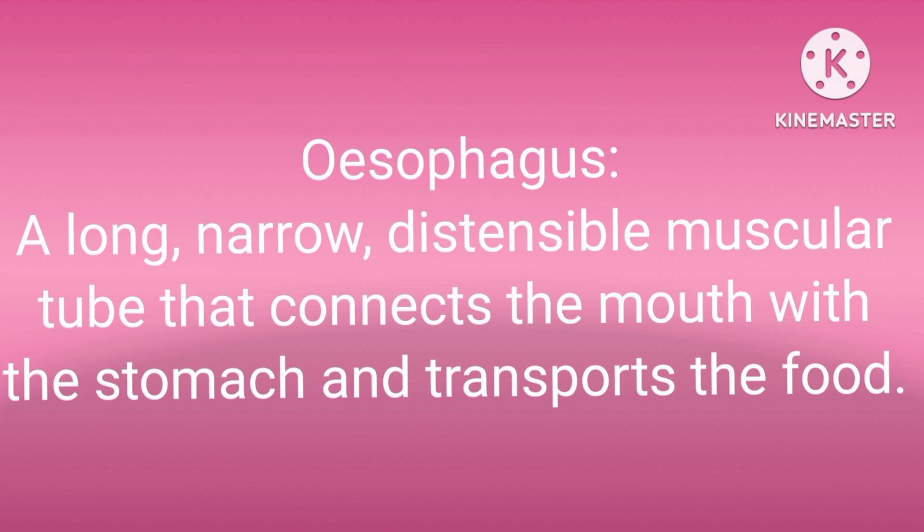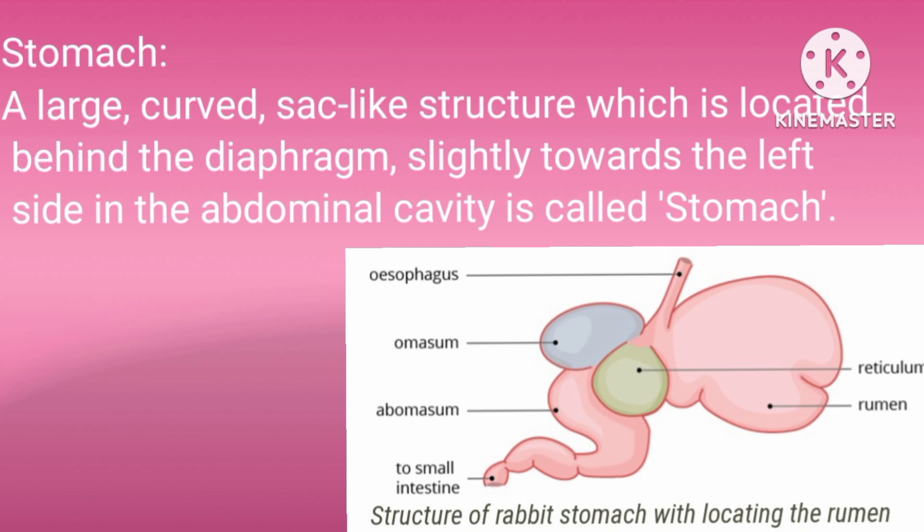The oesophagus is a long, narrow, distensible muscular tube that connects the mouth with the stomach and transports food. The stomach is a large curved sac-like structure which is located behind the diaphragm, slightly to the left side in the abdomen.